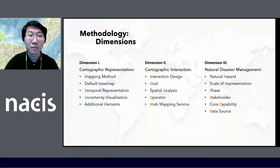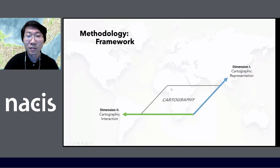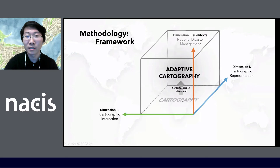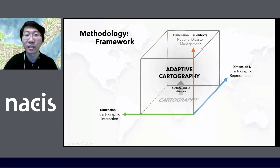Here are my three dimensions: cartographic representation, interaction, and natural disaster management. For each dimension there are several perspectives, and within each perspective there are many items — we'll review those in the results. Traditionally we use indicators to measure the cartographic representation part, and the recent trend is interactive cartography as the second dimension. We raise cartography from a flat plane to three-dimensional by adding the context of natural disaster management — this is what we call the adaptation or conceptualization. I use blue for representation, green for interaction, and orange/red for disaster management.